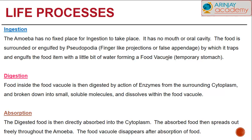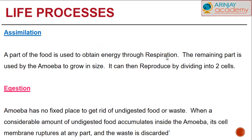The food is broken down into small soluble molecules and dissolved into the food vacuole. Once digestion has taken place, absorption occurs — the digested food is directly absorbed into the cytoplasm, and the absorbed food spreads out freely throughout the amoeba. The food vacuole disappears after the food has been absorbed.